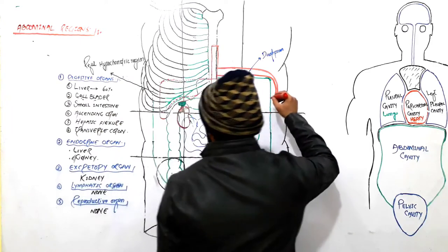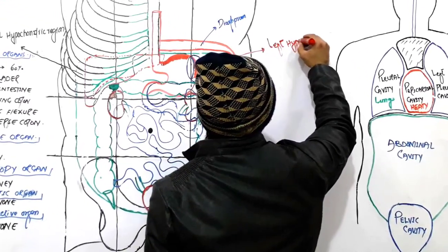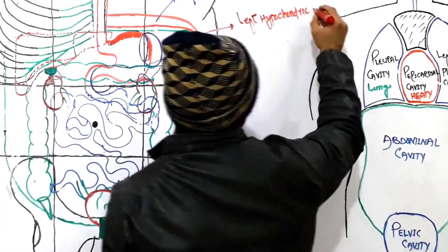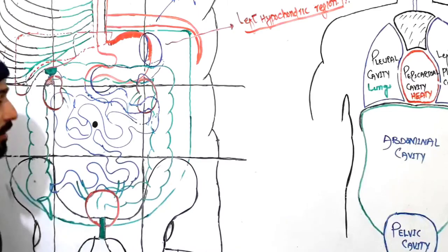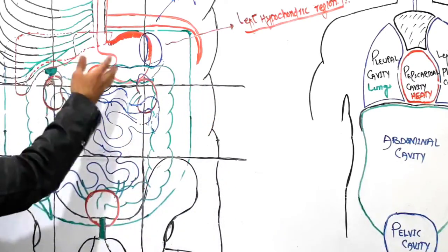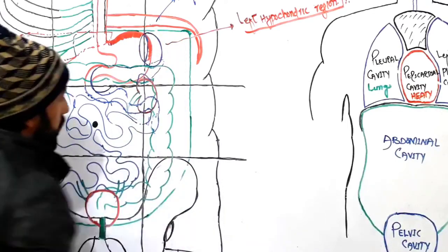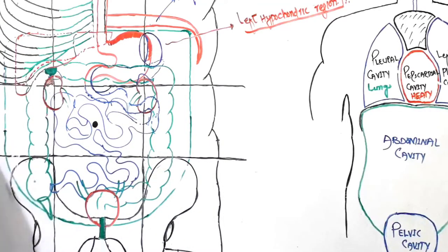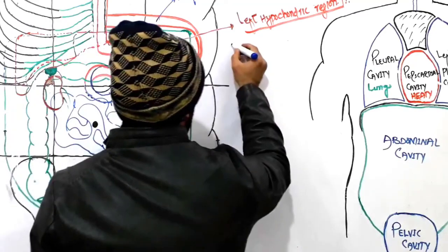This is the left hypochondriac region. Hypochondriac means below the ribs, below the cartilages of the last ribs. To keep our diagram simplified, just consider the same sketch is present on this side as well. As I divided the organs of the right hypochondriac region into digestive, endocrine, excretory, lymphatic, and reproductive organs, I will do the same for the left hypochondriac region.